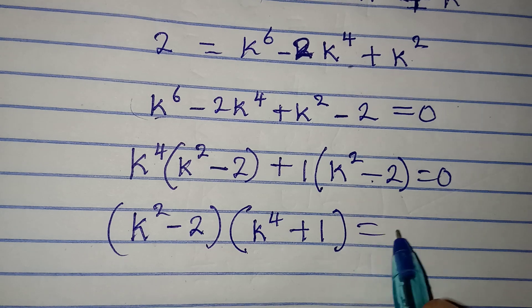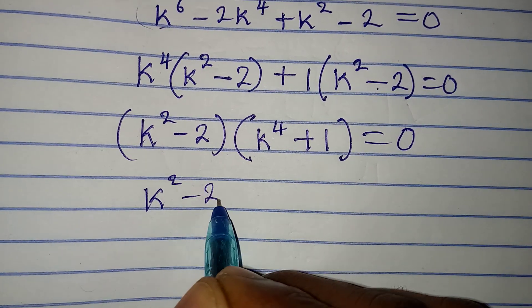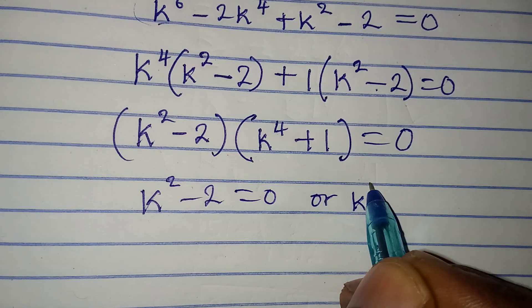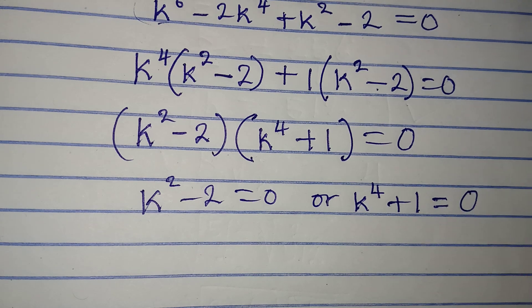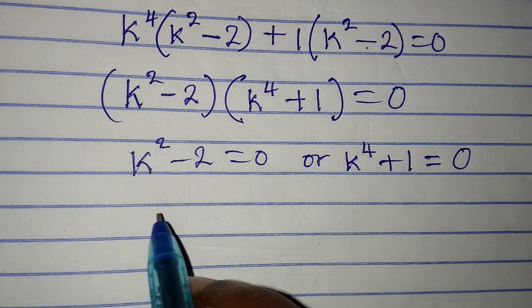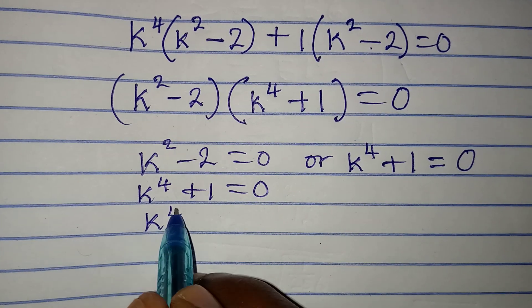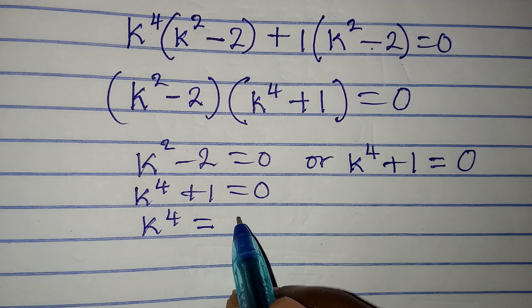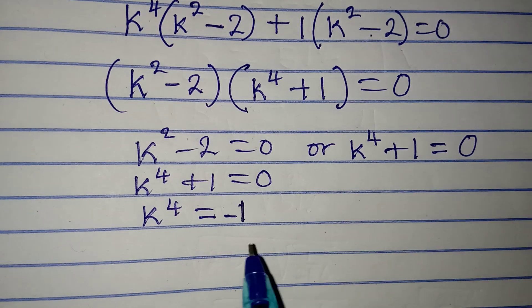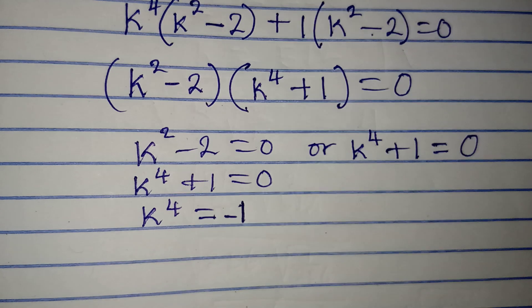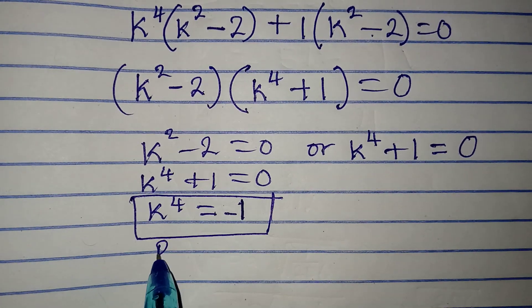Now we factorize fully: (k² minus 2)(k⁴ plus 1) equals 0. Applying the zero product rule, either k² minus 2 equals 0, or k⁴ plus 1 equals 0. Dealing with k⁴ plus 1 equals 0 first: this gives k⁴ equal to negative 1. Taking the fourth root of negative 1 leads to a complex number, so this has no real solution and must be rejected.